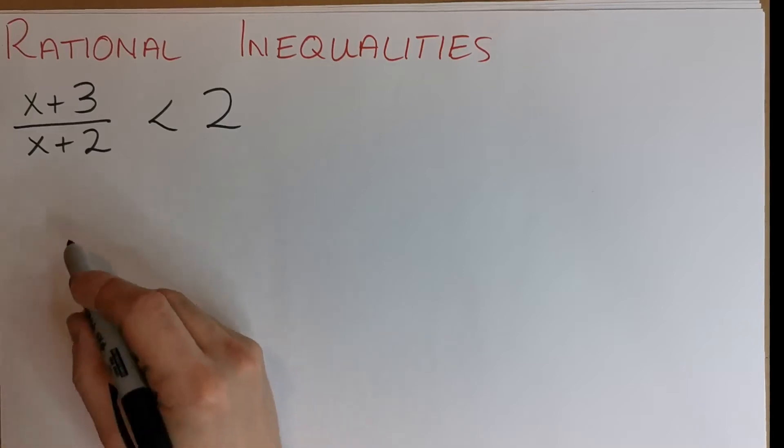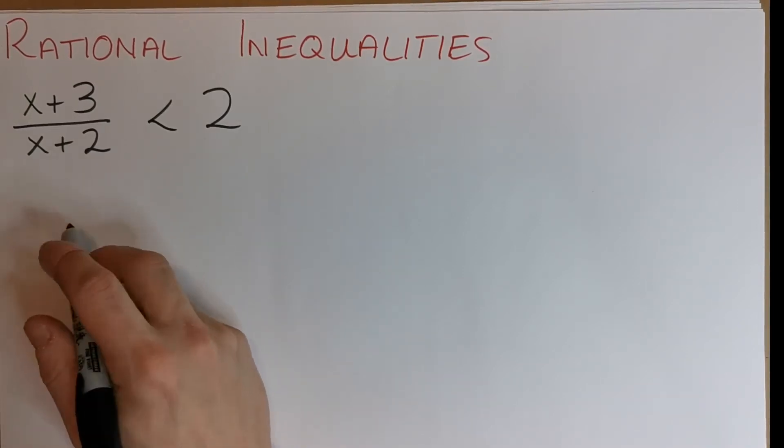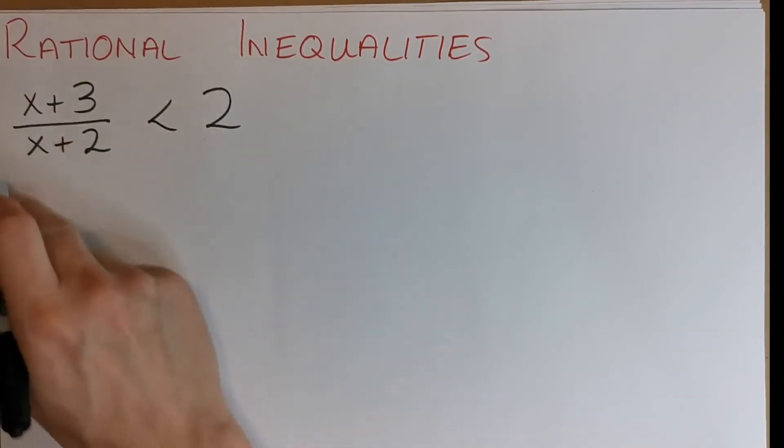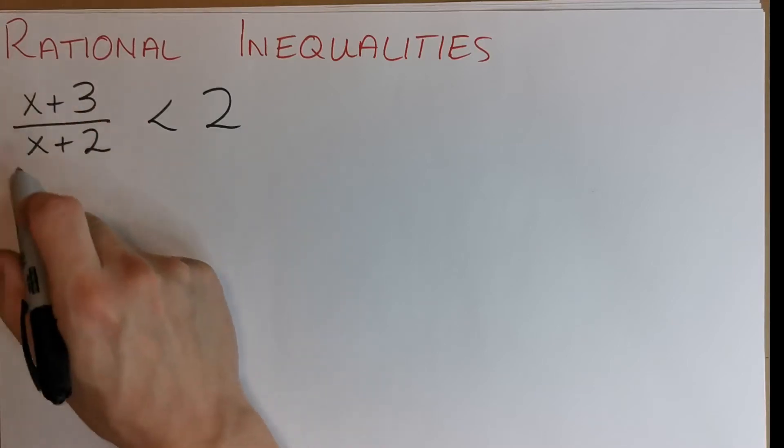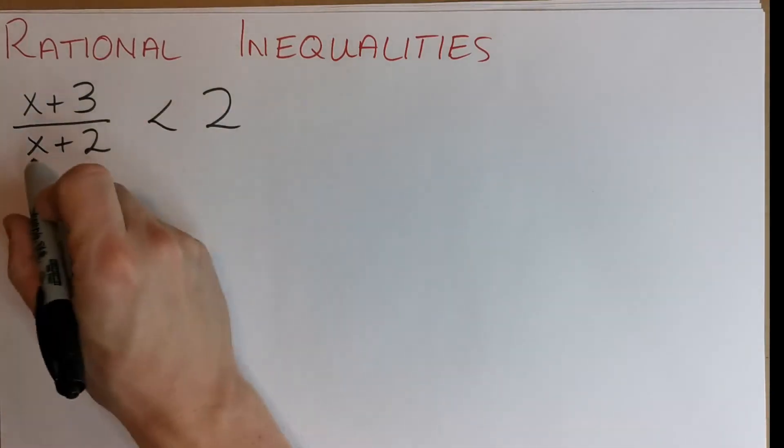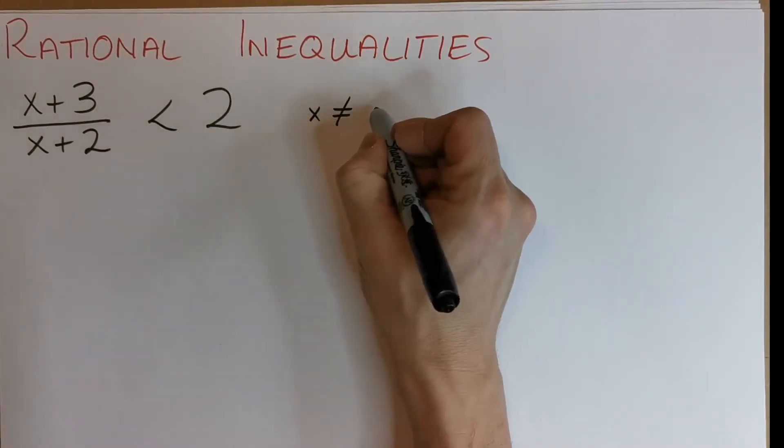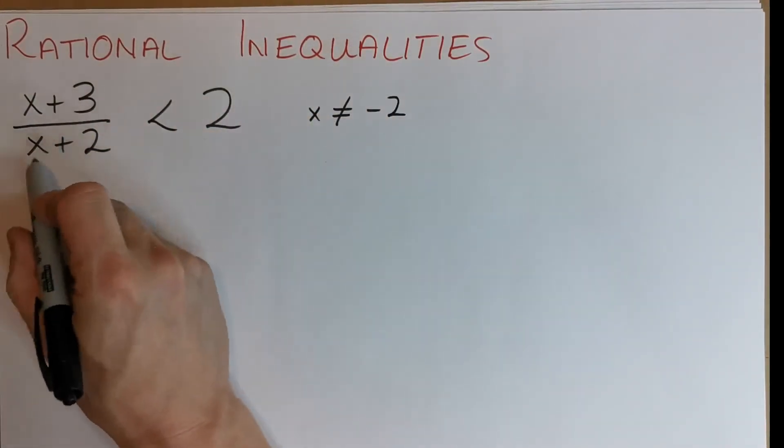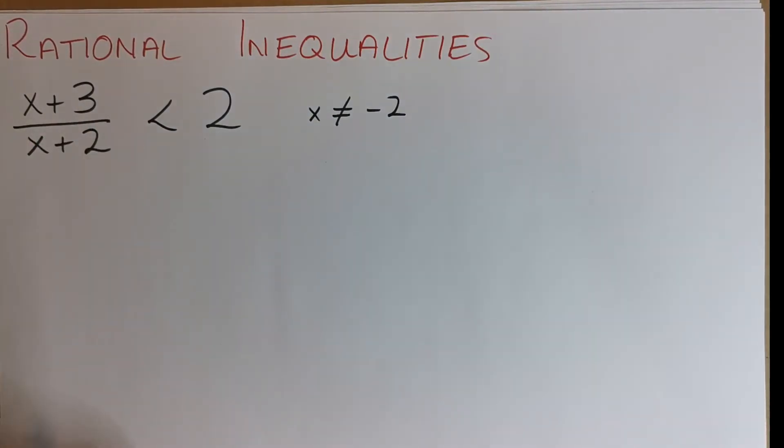So rational inequalities. These can be tricky. The main problem is we want to solve this inequality asking us where is this graph going to be less than 2. When you see something like this, you'll always see x can't be minus 2. Why can't it be? Because then this fraction would be divided by 0, that would be a problem.